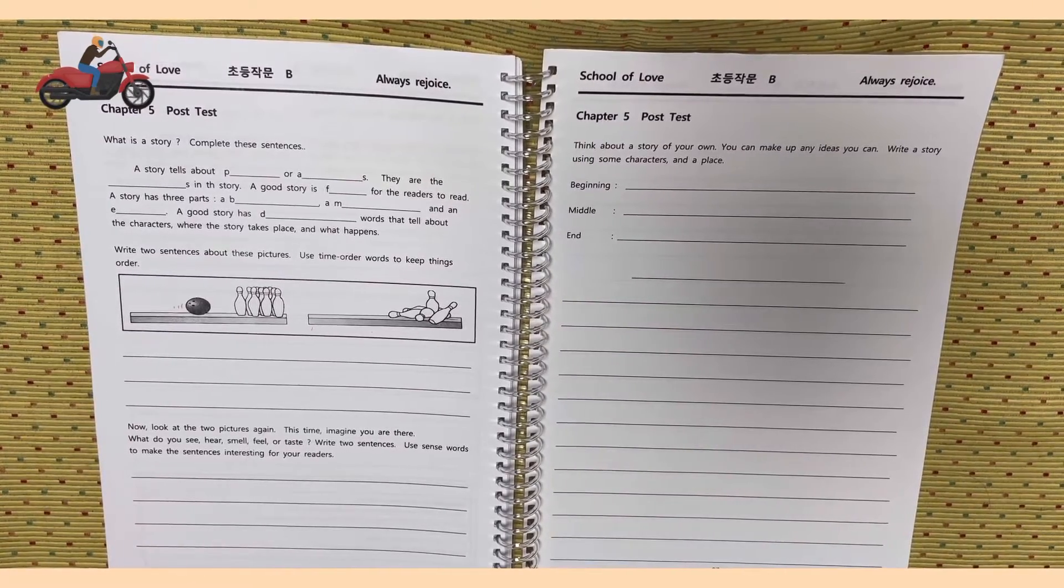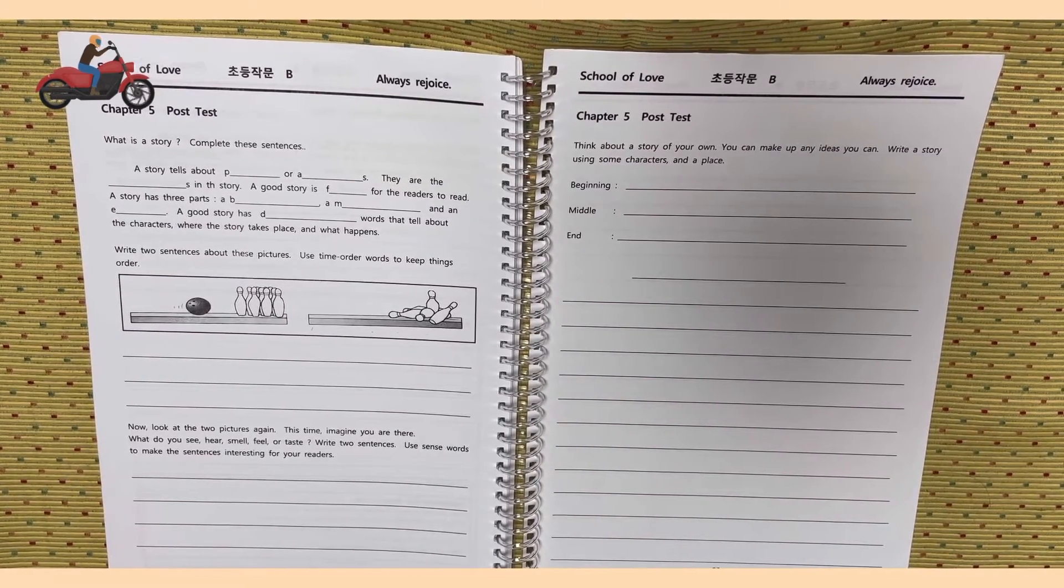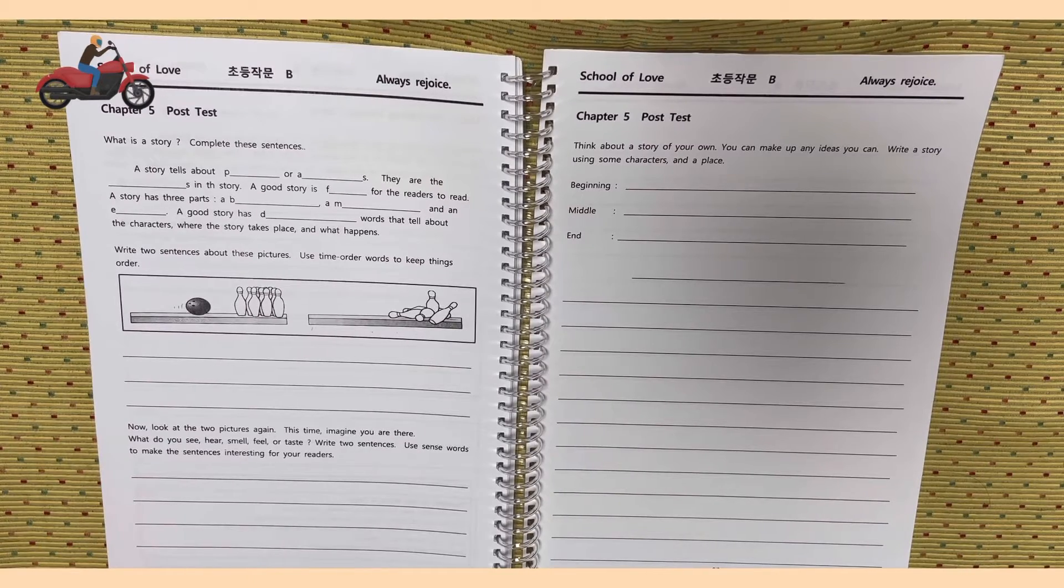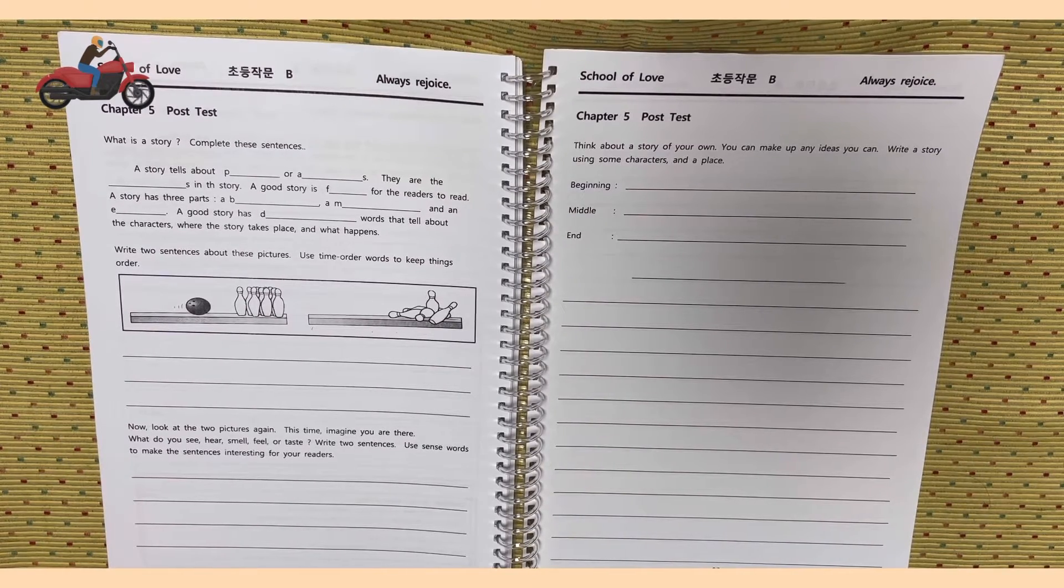A story has three parts: a B blank, a M blank, and an E blank. A good story has D blank words that tell about the characters, where the story takes place, and what happens.